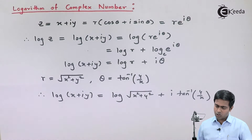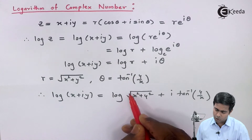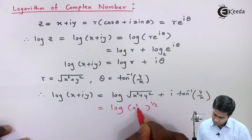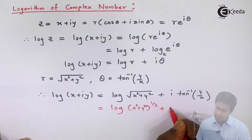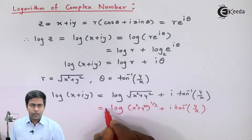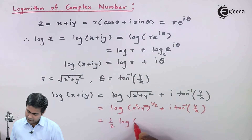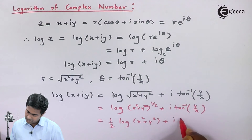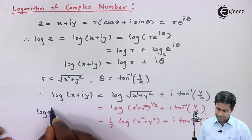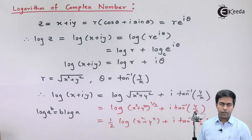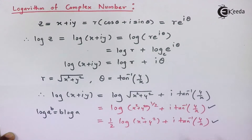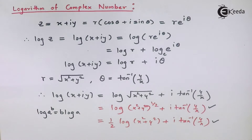We can also take the root outside the log — the root is nothing but raised to the power half. So x squared plus y squared raised to half, plus i tan inverse of y by x. Using the logarithm power rule, log of a raised to b equals b log a, we take the half out in front of the log. This gives us half log of x squared plus y squared plus i tan inverse of y by x. These are two equivalent formulas to find the log of a complex number.